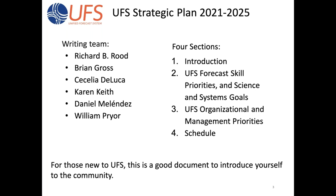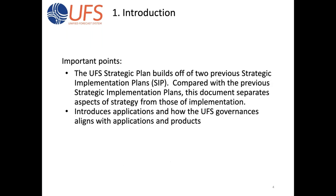What is presented in this document is just really four sections: an introduction, a presentation of UFS forecast skill priorities, science and system goals — which some people will find to be the most important things — and then UFS organizational and management priorities, which I think some other people might find to be very important. And then a notional schedule that really comes out of EMC. Brian presented it at the AMS meeting. For each chapter, I want to point out some important points.